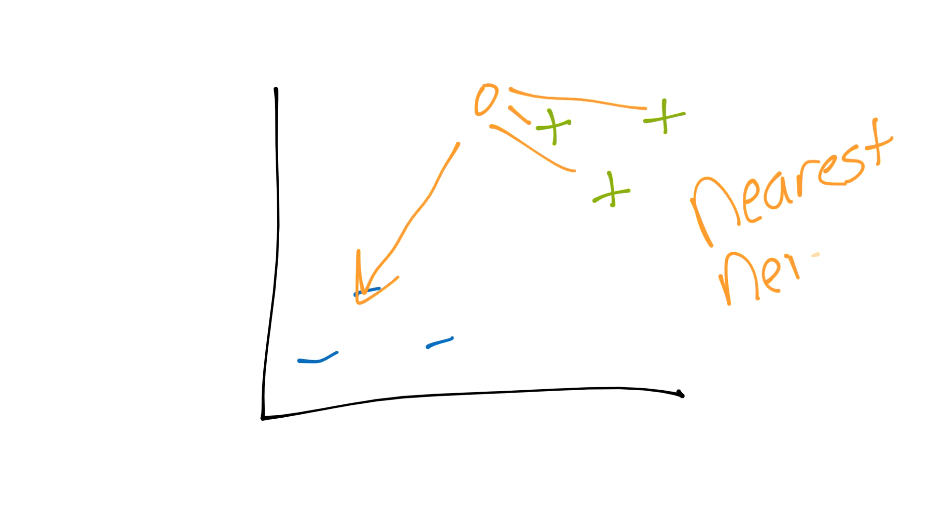With nearest neighbors, you are just checking to see basically who are the closest points to this new point on the data. In this case, we've got two dimensional data, but you can have three dimensional, ten dimensional, and so on.